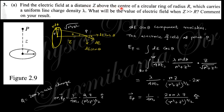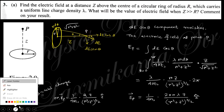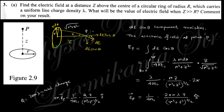Next question: find the electric field at a distance z above the center of a circular ring of radius R carrying uniform line charge density lambda. For a small element, the electric field has two components — a cosine and a sine component. Due to symmetry, the sine (transverse) components cancel out, and only the cosine (axial) component dE cos theta survives.